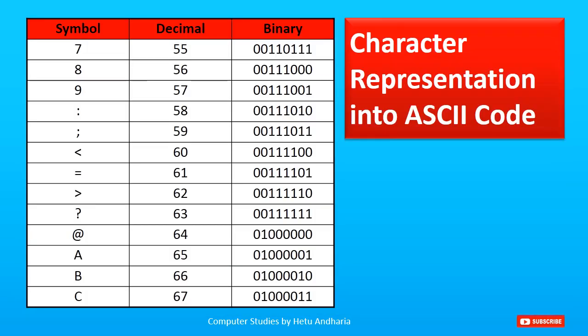Here tabular information is given showing how different characters are represented. You can pause the video and check. For example, the character '7' is converted into the decimal number 55, and 55 is then represented in binary. A few examples are given in this way.